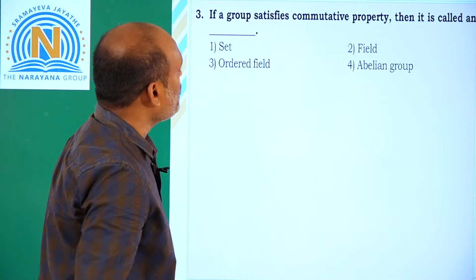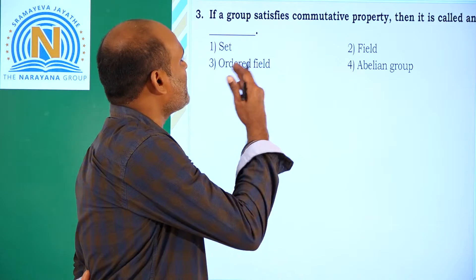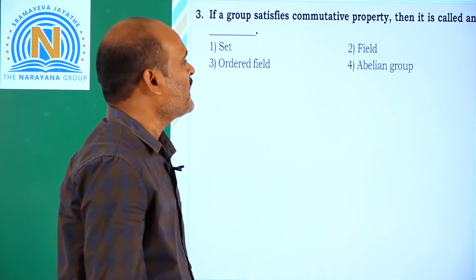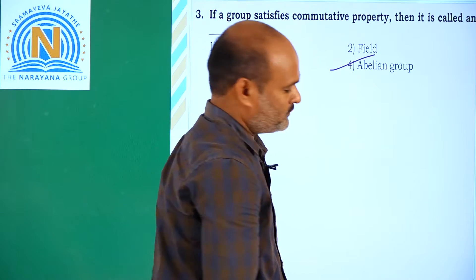Next, if a group satisfies commutative property, that group is called abelian group. That is option 4 by definition. Right?